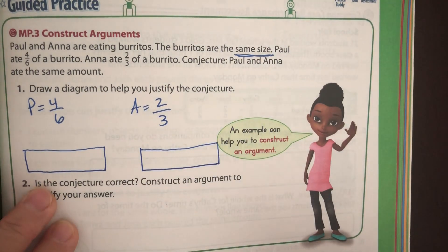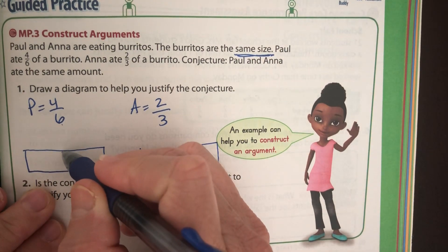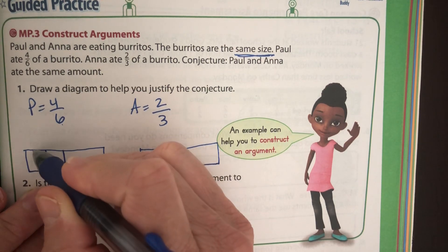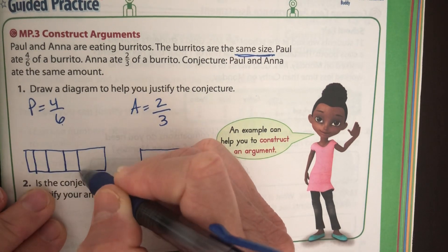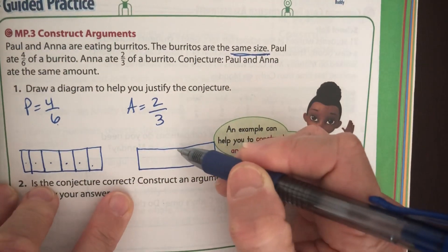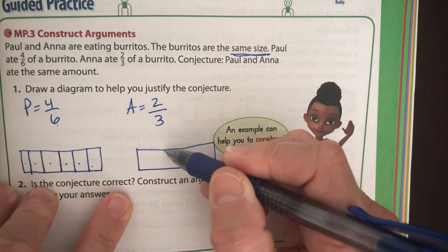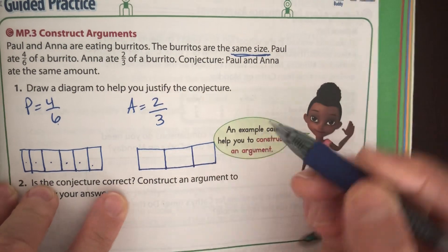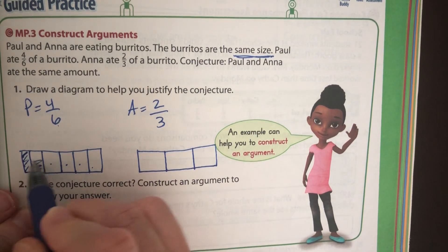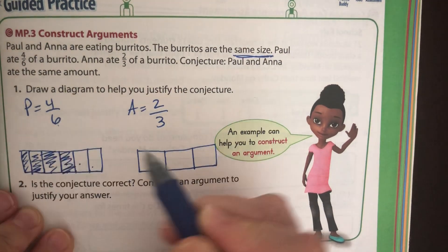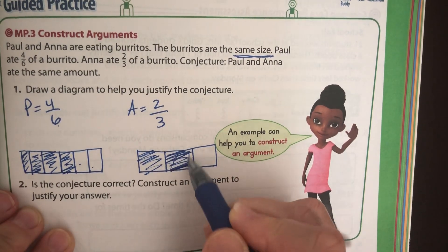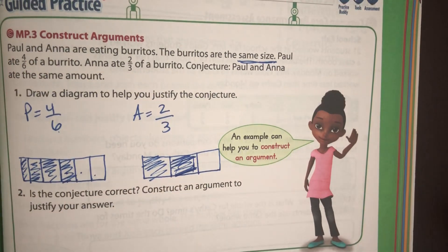We're going to divide one burrito into six equal parts — one, two, three, four, five, six — and divide the other one into thirds. So we have four-sixths and two-thirds.